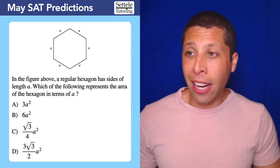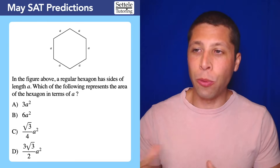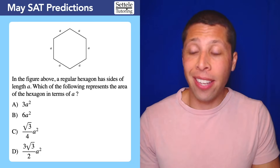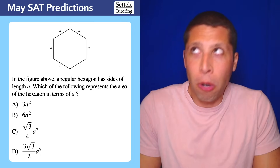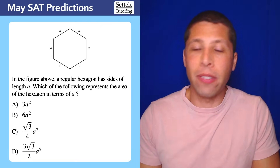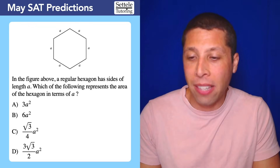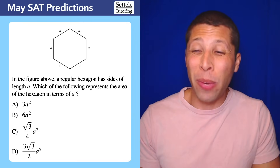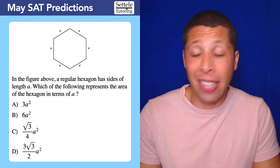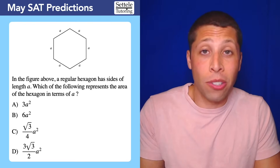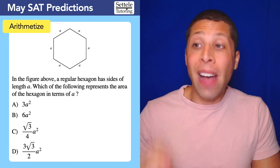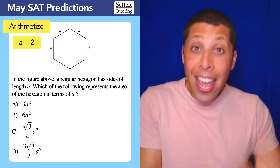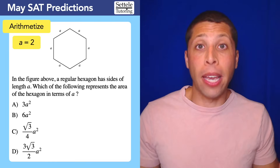Let's look at another question — this one's a little bit harder. It's about a hexagon. There is a formula you could memorize for the area of a hexagon, but that's a waste of brain space. Instead, let's use the stuff we know. The first thing that bothers me is the fact that we have 'a' as the dimension — that's very annoying. I also see 'a' in the answer choices, so I'm going to arithmetize: make up a value for 'a' so that instead of dealing with complicated geometry AND complicated algebra, we're just dealing with the complicated geometry.